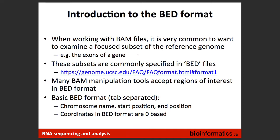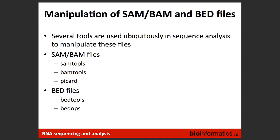BED format is another important file when subsetting BAM files. A BED file is a text file with chromosome, start, end, and feature name. If you're interested in a certain region or gene, you can put that information in the BED file — e.g., chromosome 1, positions 1 to 1000, gene X. Tools like SAMtools, BAMtools, BEDtools, and BEDops allow you to provide a BED file along with a BAM file to extract reads belonging to specified features, useful for looking at coverage or counting reads for specific genes.